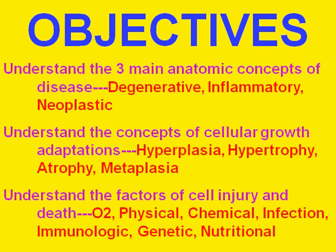We're going to talk about the three anatomic types of diseases. Classically — there are always some exceptions — but all diseases are either degenerations, inflammations, or neoplasms. We're going to talk about the plasia and trophy brothers: hypo, hyper, meta, and so on.